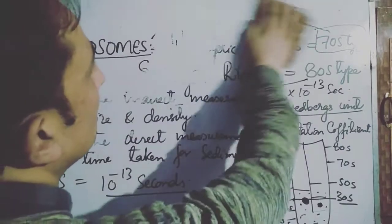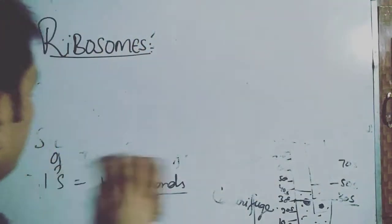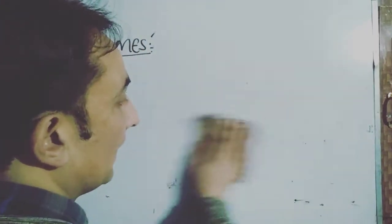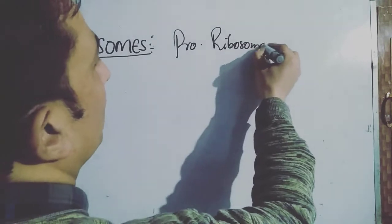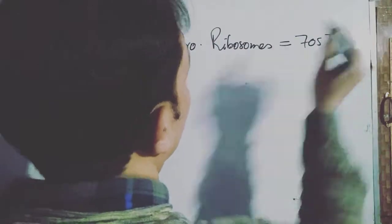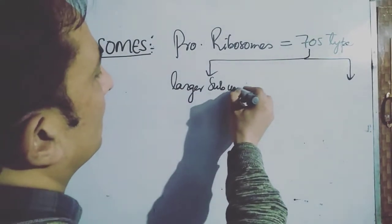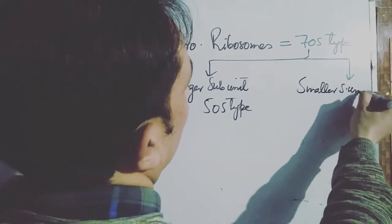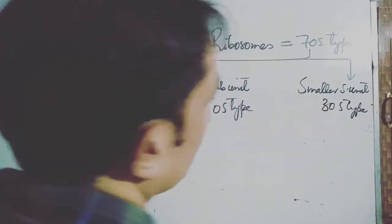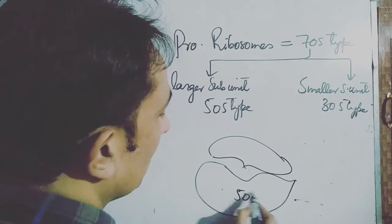Now we will look at the detailed structure of prokaryotic and eukaryotic ribosomes, at the level required for NEET and 11th class syllabus. The prokaryotic ribosome is of the 70S type and has two subunits: a larger subunit of 50S type and a smaller subunit of 30S type.